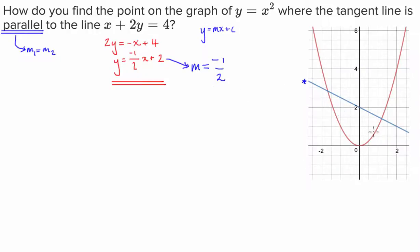So now what we've got to do is figure out on what part of the quadratic function does the gradient equal negative 1 over 2. So the only way we can do that is by taking the derivative of this quadratic.